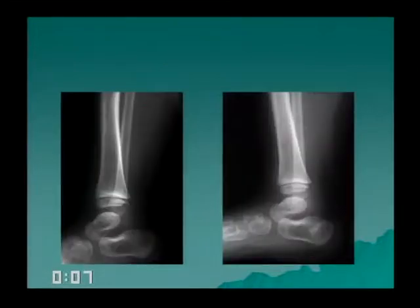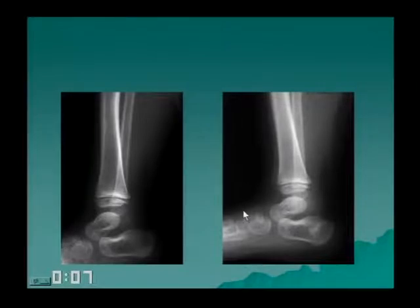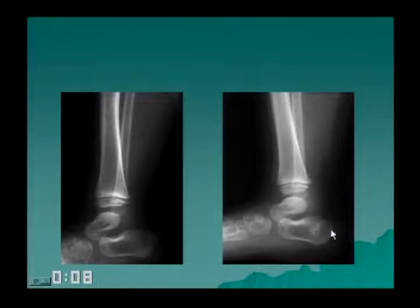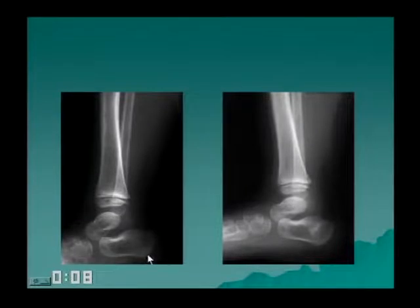A patient falls, presents with pain, and returns ten days later — the diagnosis is a stress fracture. The diagnosis of a stress fracture in the acute phase is difficult. After about 48 to 72 hours, a bone scan will light up like a light bulb. Sclerosis after trauma with a normal previous study is very diagnostic for a stress fracture. The cuboid can have the same manifestation as a stress fracture in toddlers.